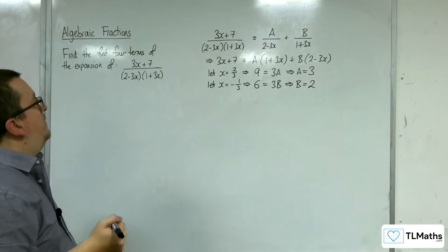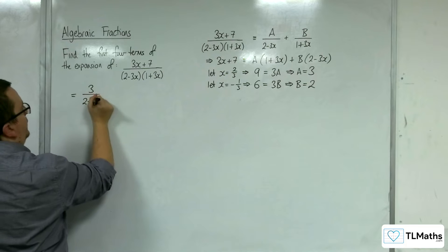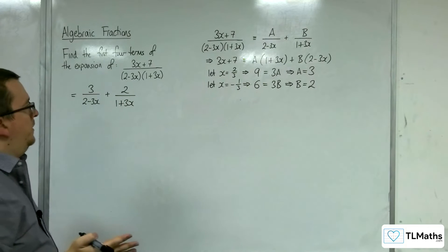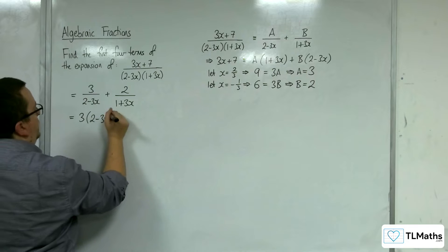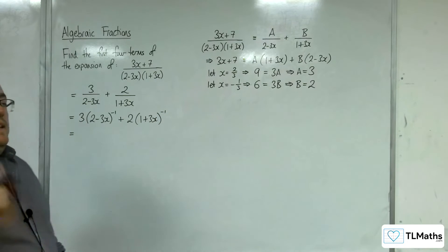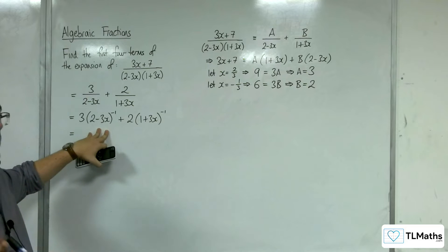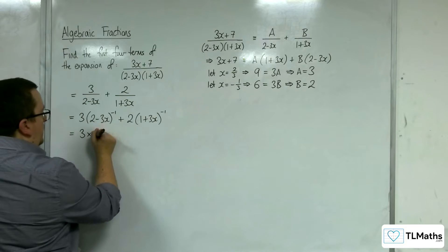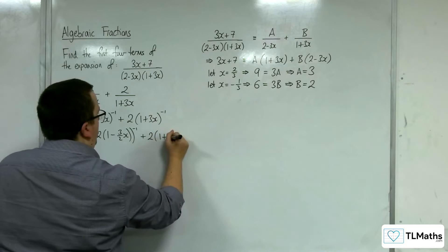So we've got A = 3 and B = 2. We can write this as 3/(2 − 3x) + 2/(1 + 3x), which I'll rewrite as 3(2 − 3x)⁻¹ + 2(1 + 3x)⁻¹. Now there's another problem: we can't use the binomial expansion with (2 − 3x) because it needs to be (1 + something) or (1 − something). So we factor out 2⁻¹, giving (3/2)(1 − (3/2)x)⁻¹ + 2(1 + 3x)⁻¹.